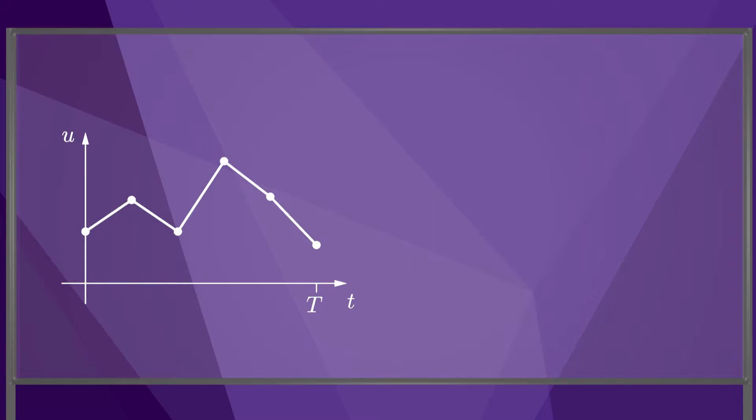For this example, let's assume piecewise linear controls. Integrating the equations of motion, we get the robot's trajectory. This trajectory intersects obstacles and does not end at the goal configuration, so our initial guess is not a solution to the problem.